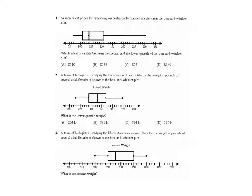So looking at question one, it says, season ticket prices for symphony orchestra performances are shown in the box and whisker plot. Which ticket price falls between the median and the lower quartile of the box and whisker plot? Here is the median. Here is the lower quartile. So what we're looking for is any ticket price that falls in this tiny little rectangle here.